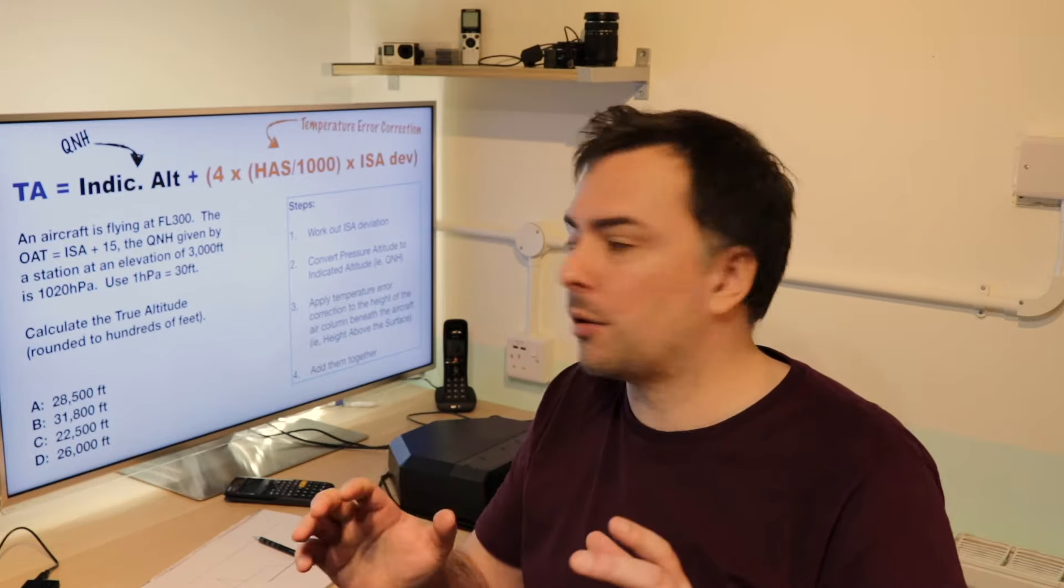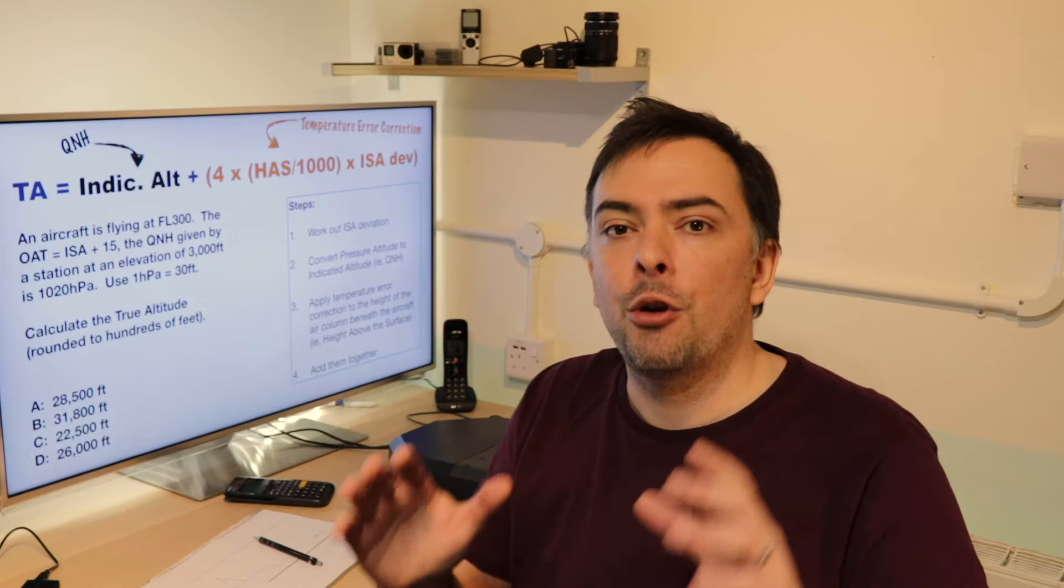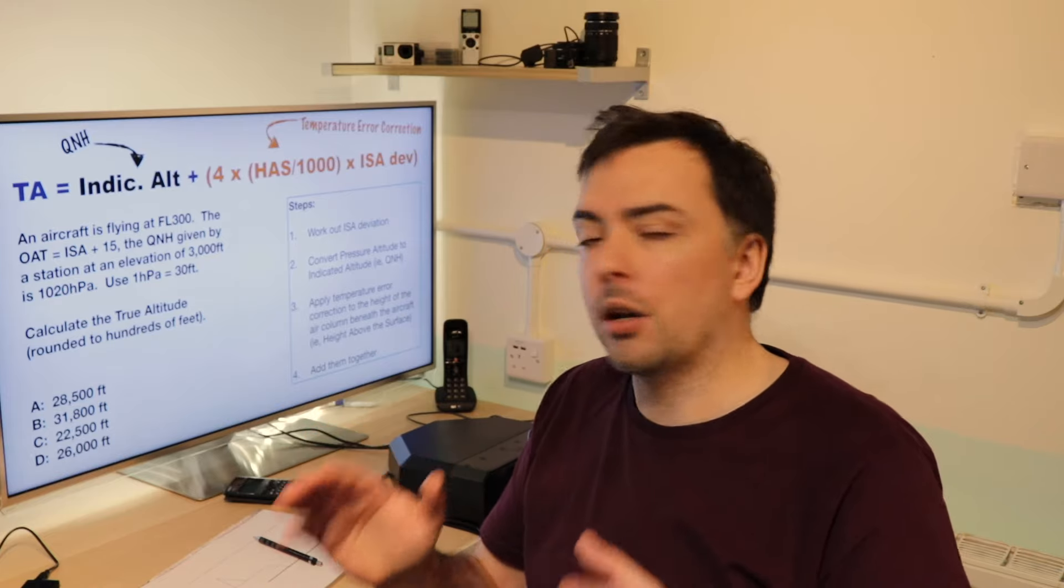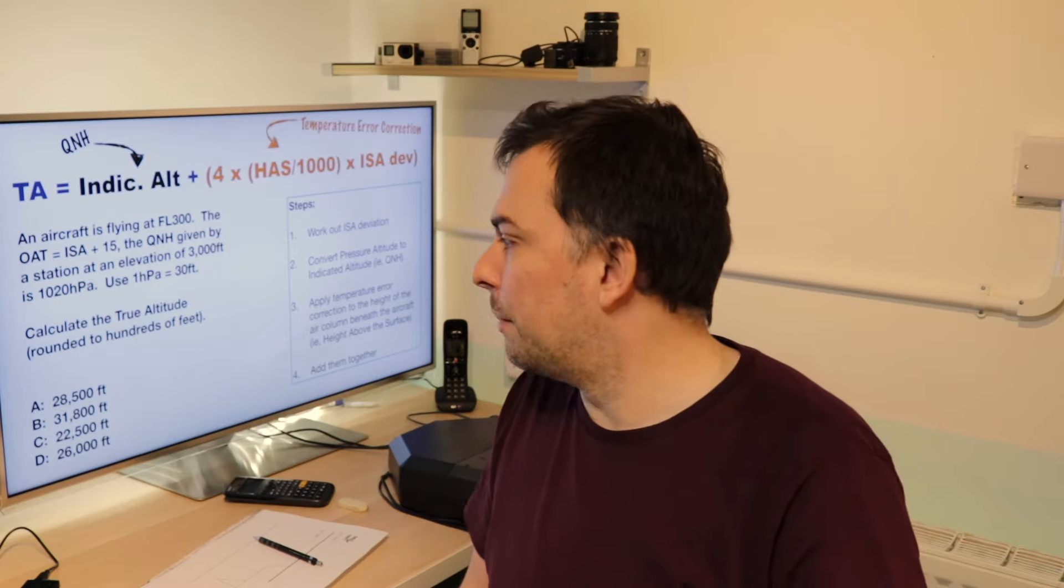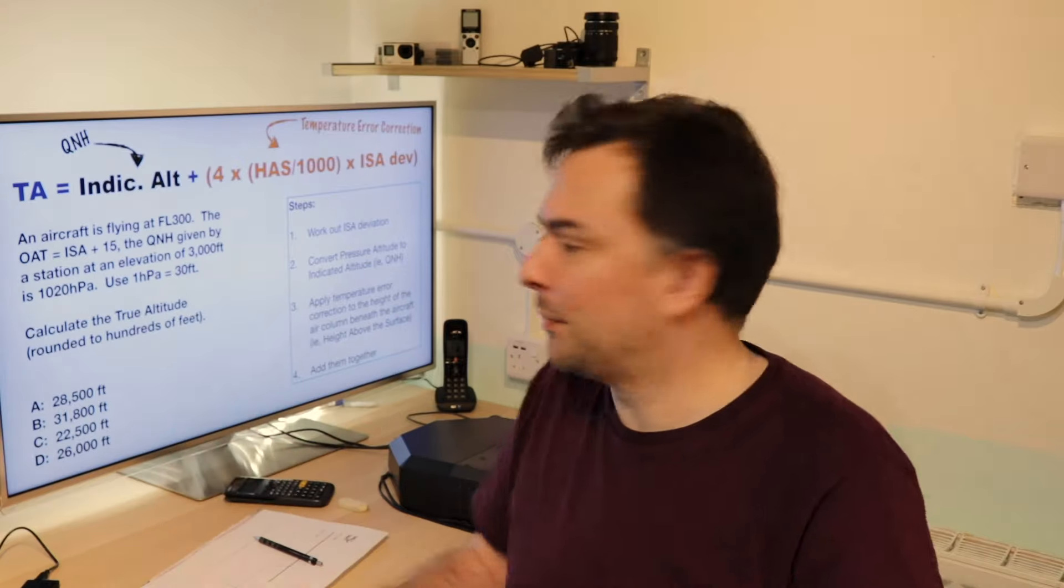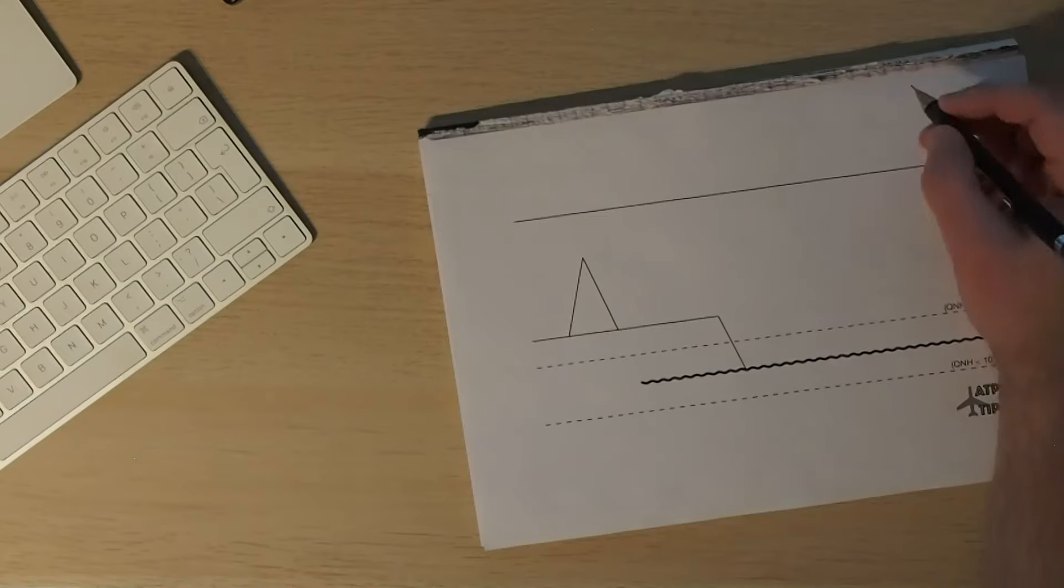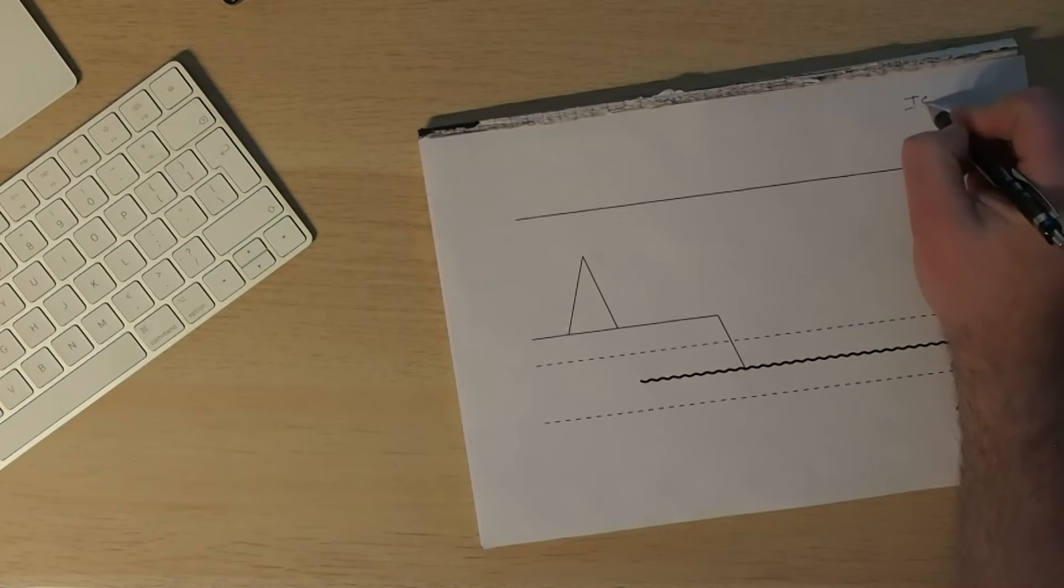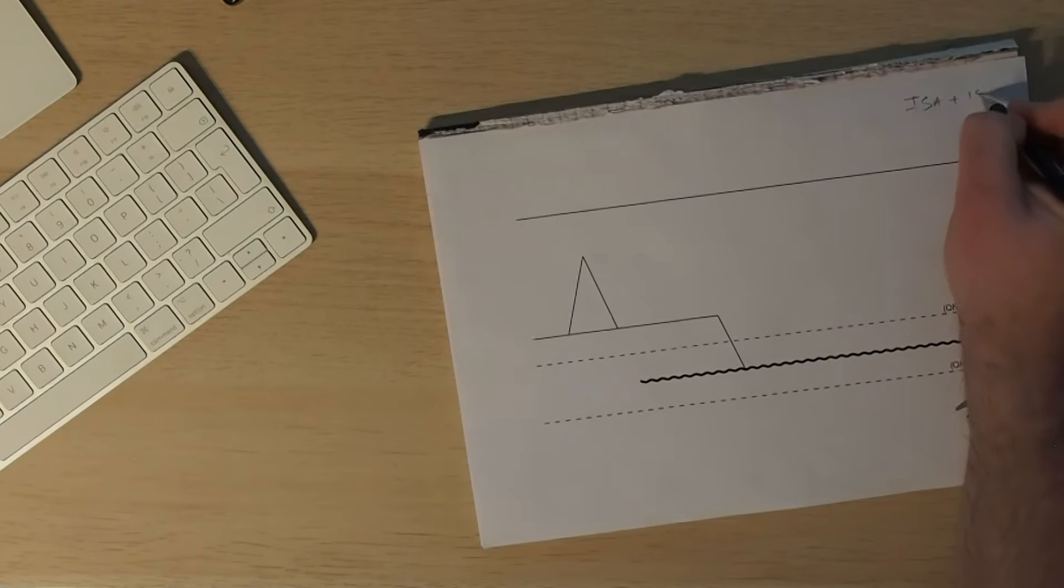Also, note, right at the end of the question, it says calculate your altitude rounded to hundreds of feet. What does that tell you? It should tell you that you're not going to get one of these answers precisely. That's kind of encouraging. Okay, let's set up the question.